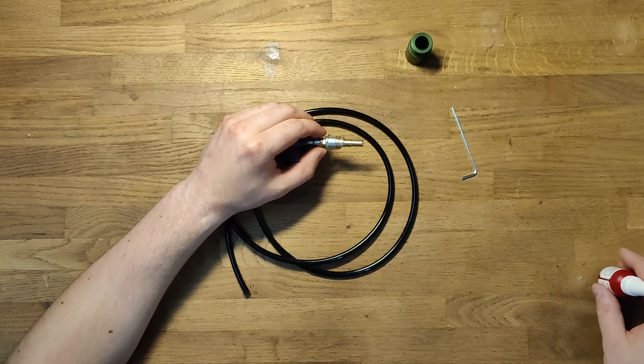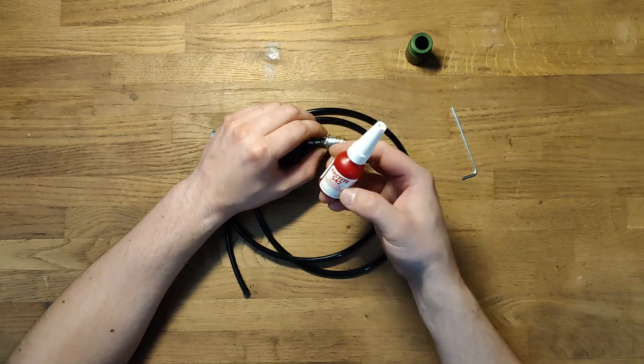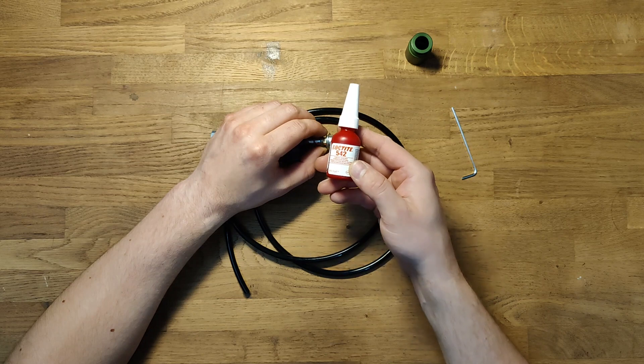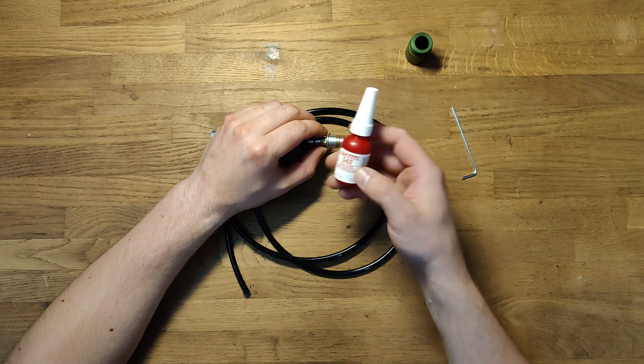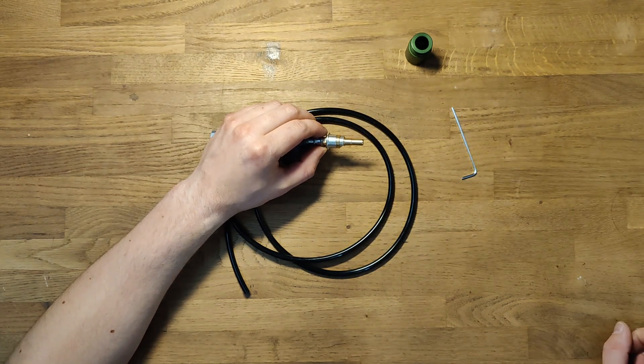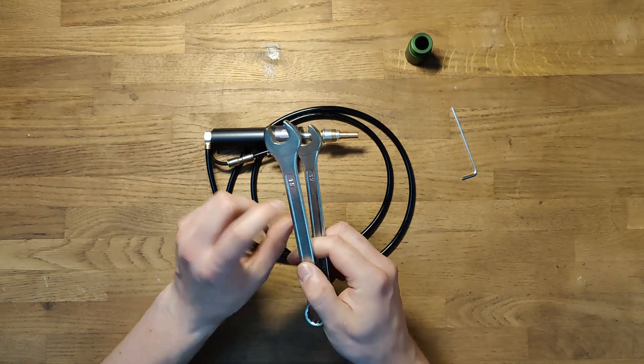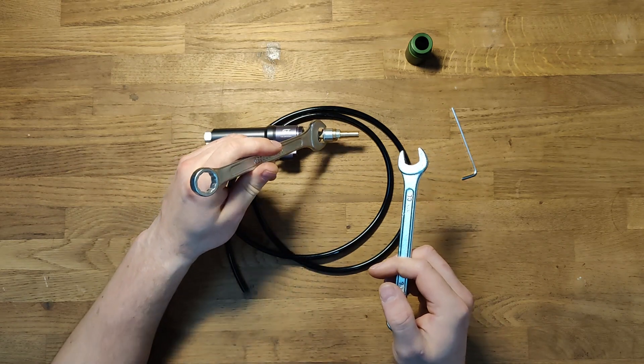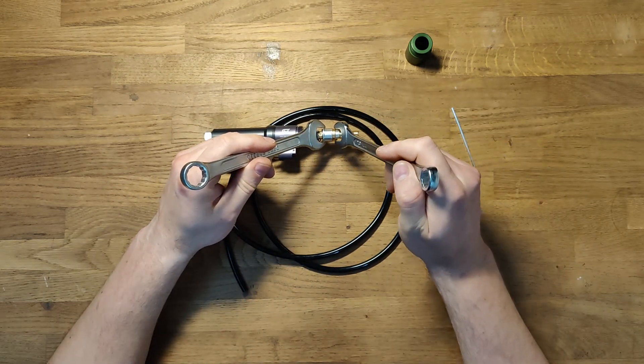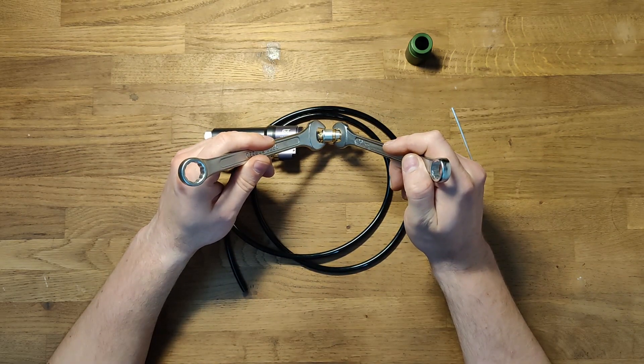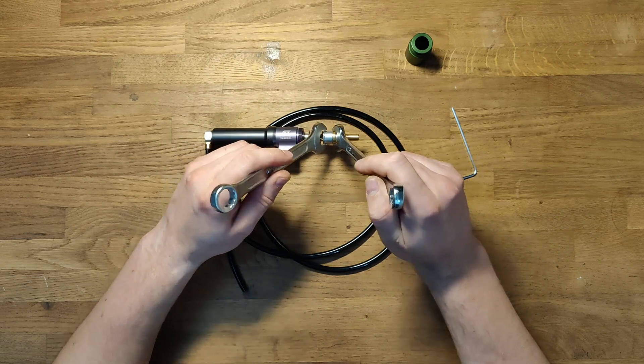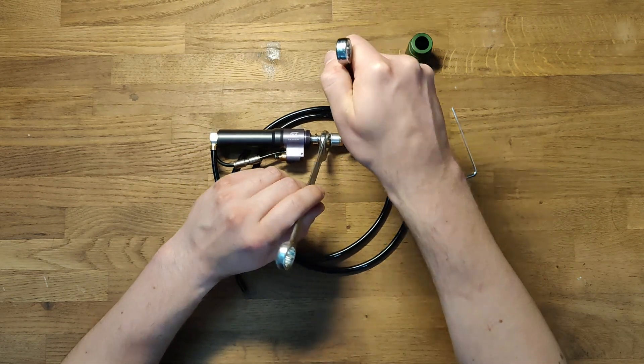To lock it in place you can use thread sealant or Loctite product. Or simply use a pair of spanners, 13 and 15, to lock it in place. The 15 goes on the silver part, the 13 goes on the brass locking nut.